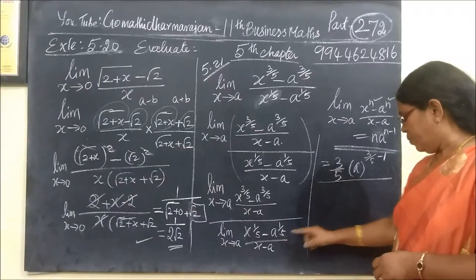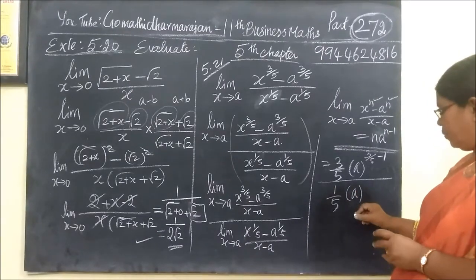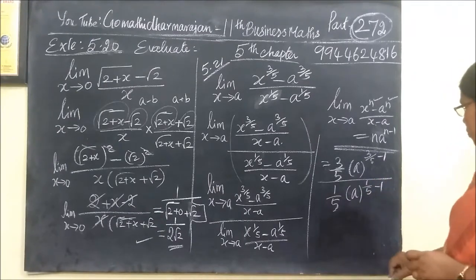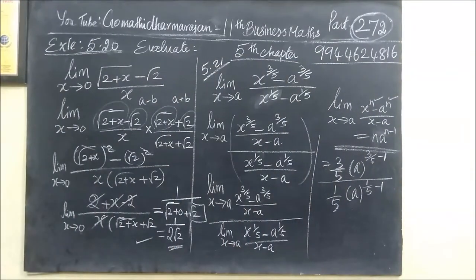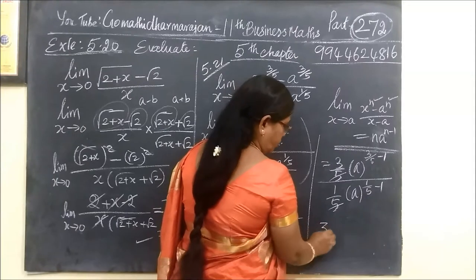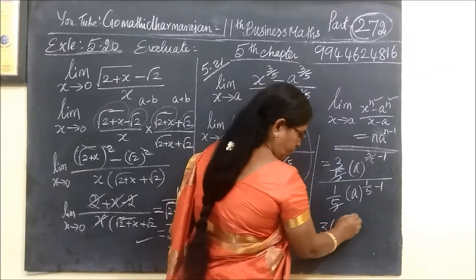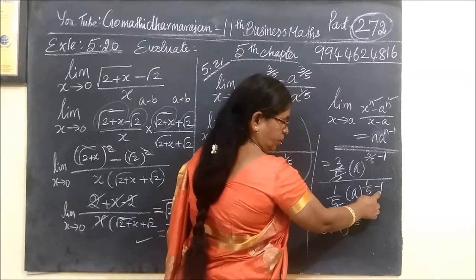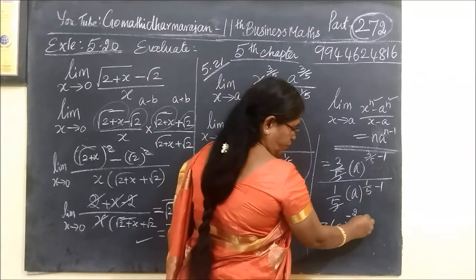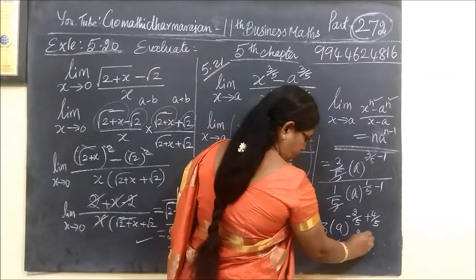So n·a^(n-1): for 3/5, that is 3/5 minus 1 = minus 2/5. For 1/5, that is 1/5 minus 1 = minus 4/5. Cross-multiplying by 5 gives: (3/5)·a^(-2/5) divided by (1/5)·a^(-4/5). Simplifying: 3 divided by 1, times a^(-2/5 + 4/5) = a^(2/5), times 5/5 gives the answer 3/1 · (1/5)/(1/3)... the final answer is 2/5.